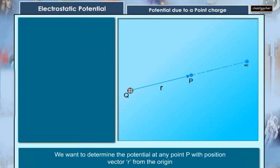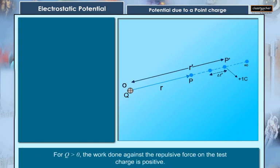Since work done is independent of the path, we choose a convenient path along the radial direction from infinity to the point P. For Q is greater than 0, the work done against the repulsive force on the test charge is positive.